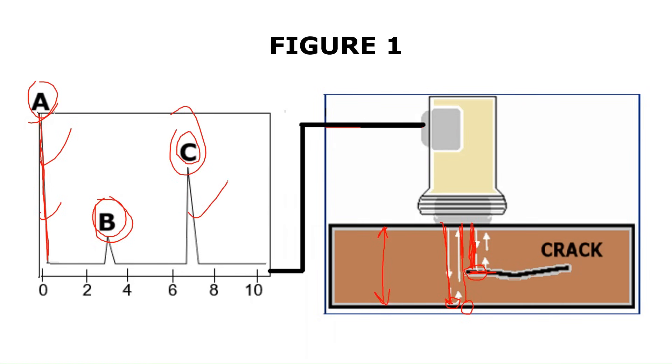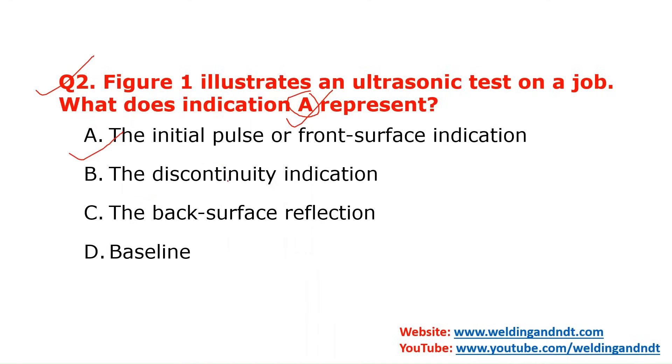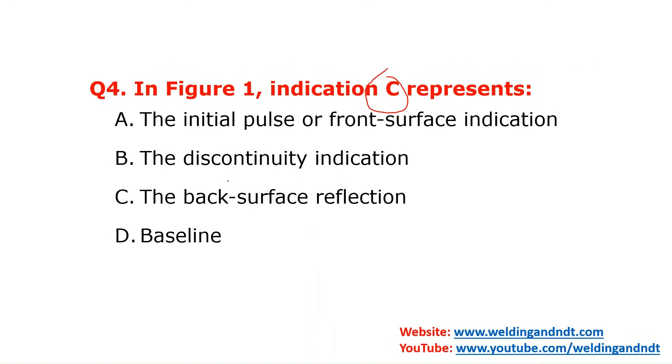Question number four: indication C represents the back wall echo or back surface reflection. The correct answer is option C — back surface reflection.